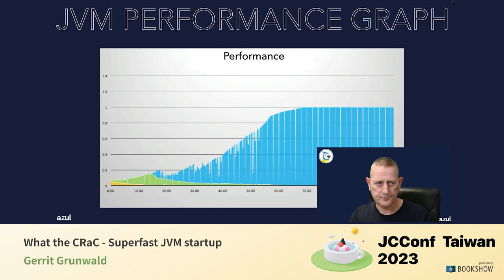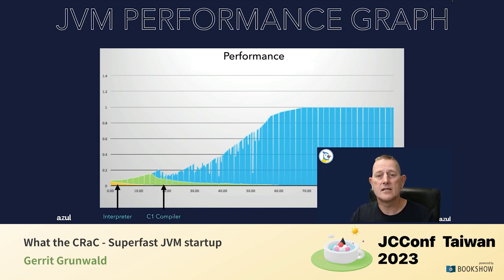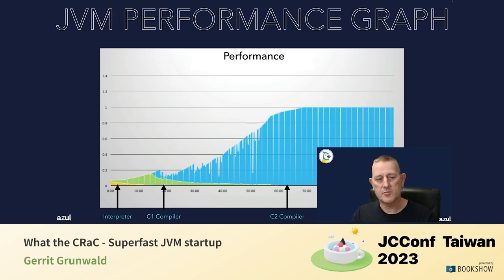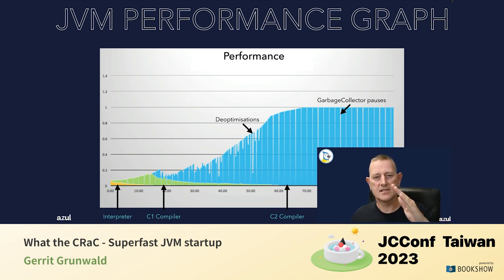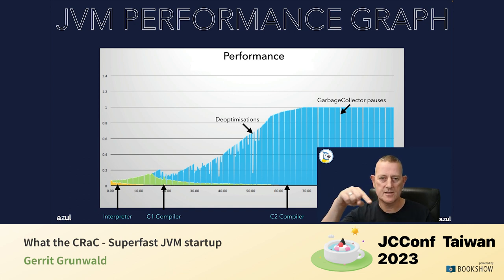Looking at the performance graph, we see three colors: yellow for the interpretation phase, green for the C1 phase, and blue for C2. It starts with interpretation, moves to C1 compile and profiling, then C2, getting faster and faster until it reaches peak performance. The periodic gaps in the blue area are typically garbage collection pauses. The large drops early on are deoptimizations — the JVM optimized the code, then it became invalid, dropped back to interpretation, and had to go through C1 and C2 again.